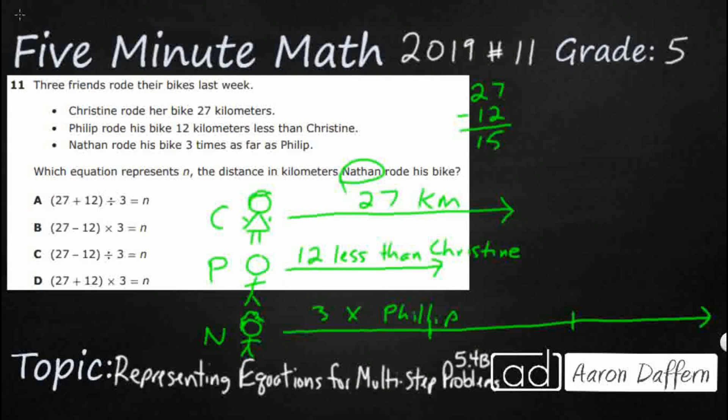So I am going to put 27 right here, I am going to put 15 right here. So we have 15, that is Phillip, I am just going to put that right here in parenthesis so we can keep track of it.